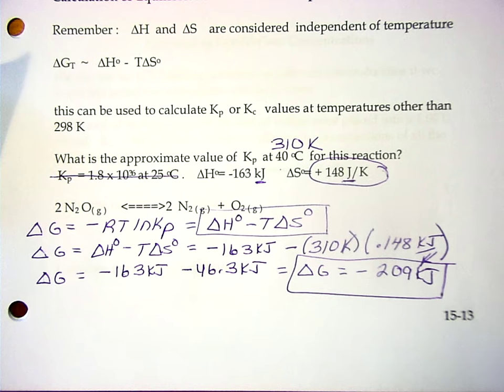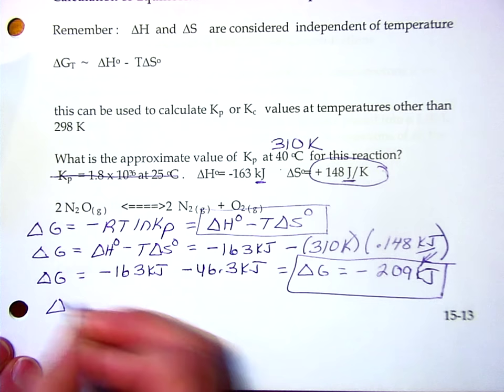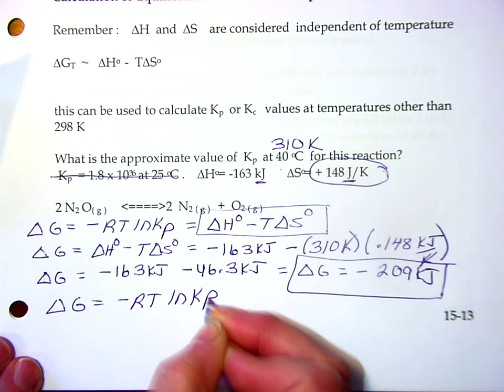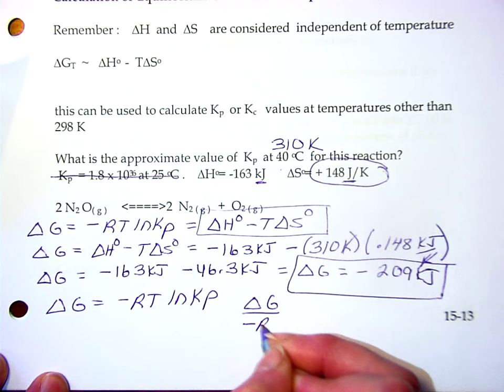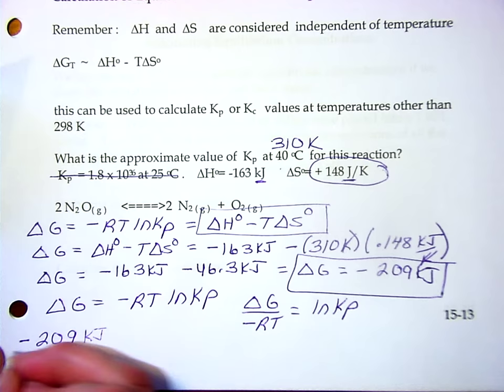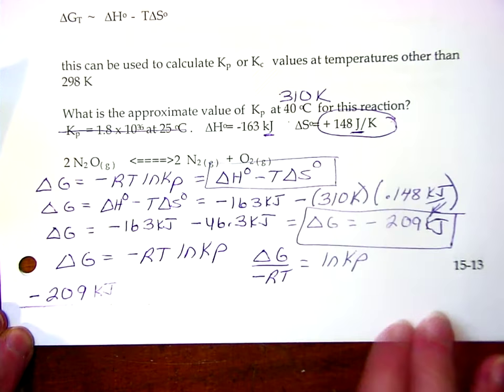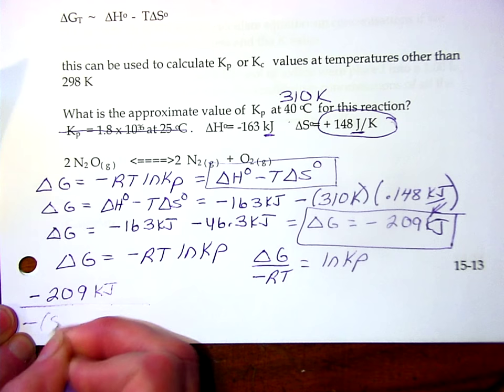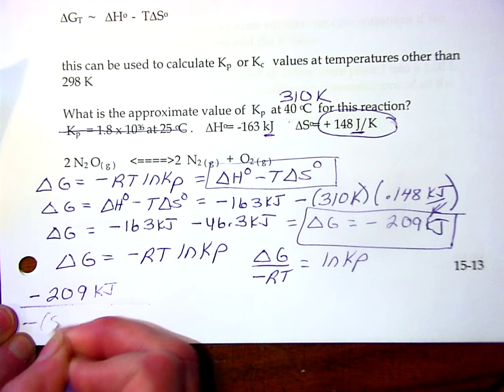Now I know delta G. I can use my delta G to find my K sub P at some other temperature. Now I use the other equation. Delta G is minus RT ln of K sub P. So delta G divided by negative RT is equal to the natural log of K sub P and I can solve for K sub P. So negative 209 kilojoules divided by a negative R 8.314. I'm running out of ink in my pen. I'm going to have to pause this video and go find another pen.